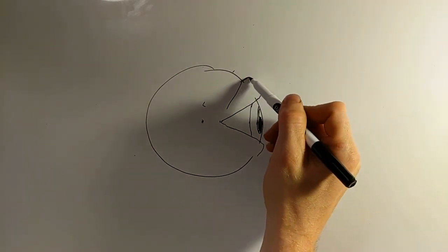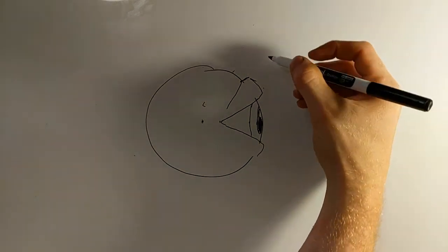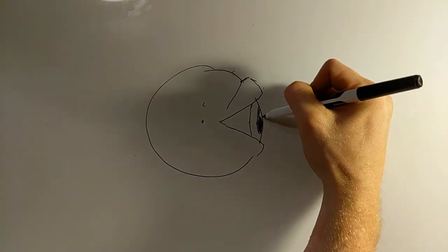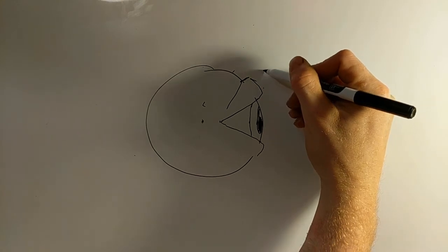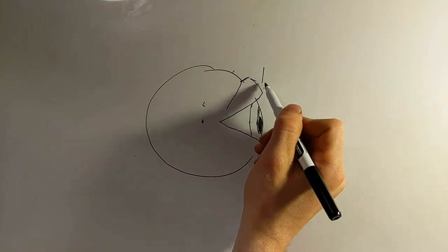The middle of the eyebrow is going to be again on this third dash here, and the other end of the eyebrow is going to be in line here. Then we connect it.